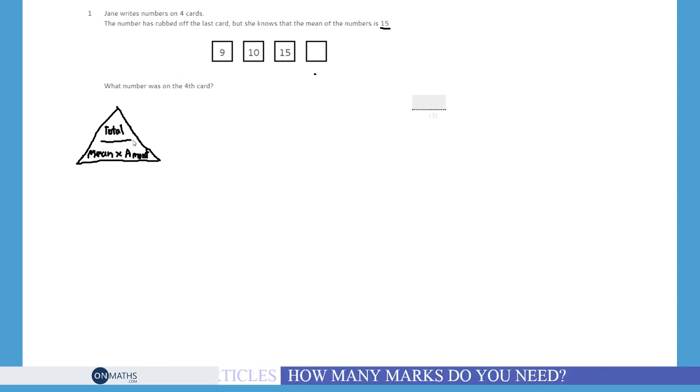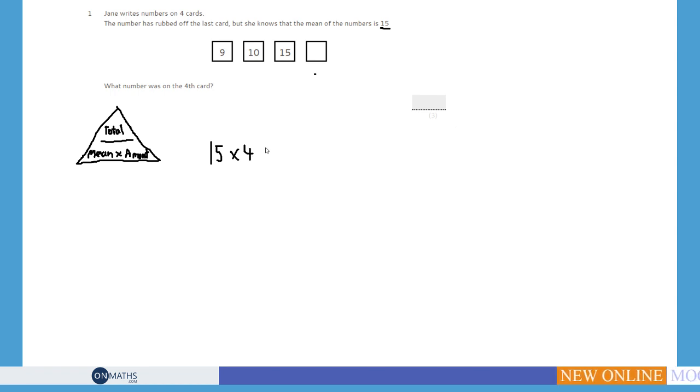Normally when you find the mean, you get the totals, you add up all the numbers, and then you divide them by how many numbers there are. But we want to find out the total of the four numbers. So instead we're going to be getting the mean and times it by the amount of numbers. So our mean is 15 and the amount of numbers is 4. If we times those together we get 60. So therefore all of these numbers are going to add up to 60.